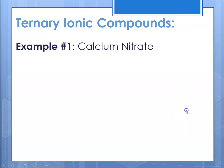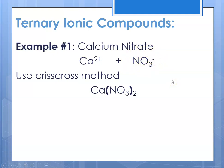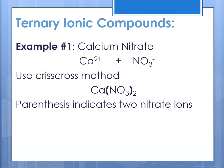Example one: calcium nitrate. Calcium is a group two metal, so its charge is plus two, and the nitrate ion has a charge of negative one. Using the crisscross method, we get Ca(NO₃)₂. This two has to come outside of the nitrate ion. Remember, the nitrate ion is a unit — you treat it as a single atom. The parentheses tell us there are two nitrate ions.